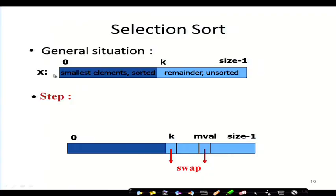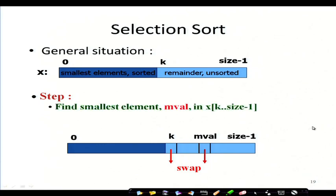We were discussing about sorting, and in particular we were discussing about one sorting technique which is selection sort. In selection sort, we have an array of size 'size', so the index is 0 to size minus 1. We assume that some parts are sorted — if from 0 to k is sorted, then our job is to sort from k to size minus 1.